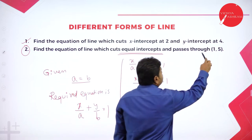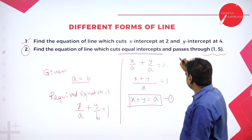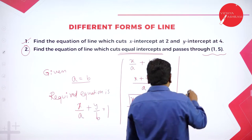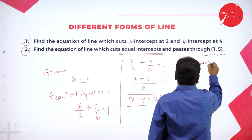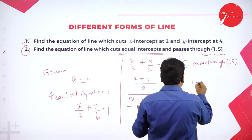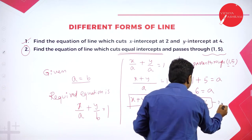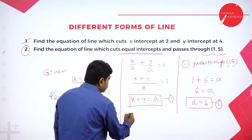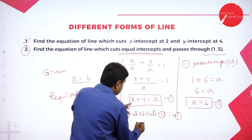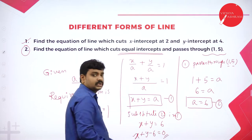To find unknown a, use the hint that the line passes through 1 comma 5. If any line passes through a point, substitute the point in the line equation. So substitute x equals 1 and y equals 5 into x plus y equals a: 1 plus 5 equals a, so a equals 6. This is equation 2. Substitute equation 2 back into equation 1: x plus y equals 6, or x plus y minus 6 equal to 0. This is the answer.